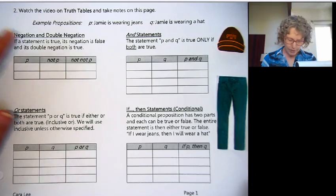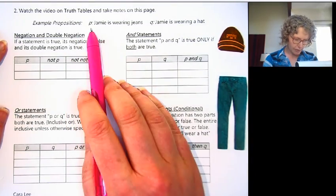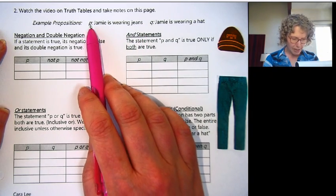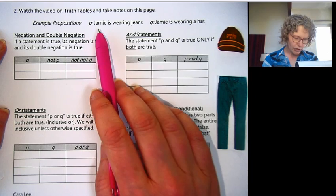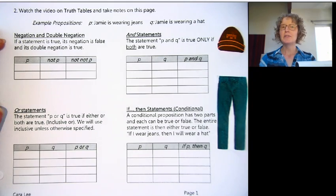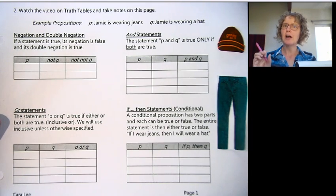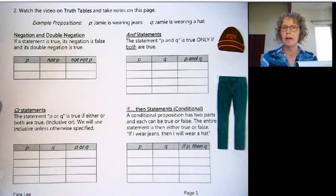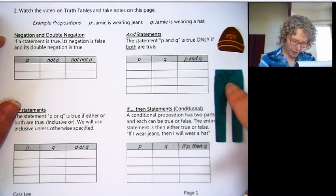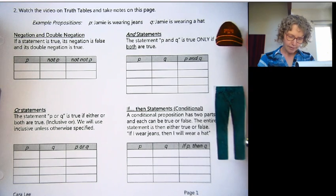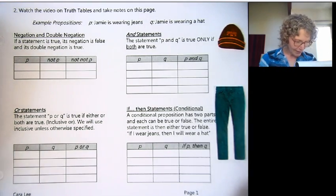For this video we have two example propositions. We use lowercase letters to represent propositions, so we have P and Q. P is Jamie is wearing jeans, and Q is Jamie is wearing a hat. We're just going down to the very basic building blocks of arguments, a single statement. It has to be a complete sentence. It could be true or false, but it's just a statement.